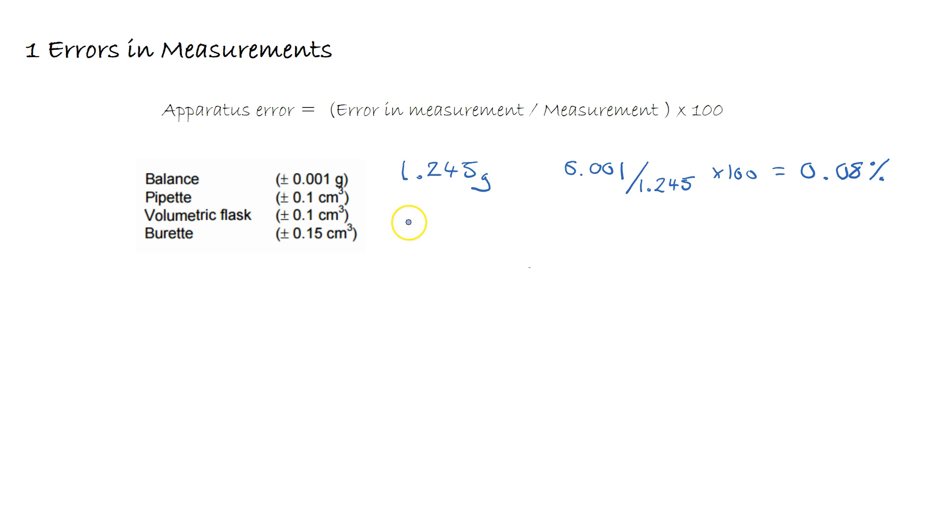If that has been made up to 250 cm³ in a volumetric flask, the error in that measurement is going to be 0.1 cm³ over 250 times by 100, giving us an error of 0.04%.